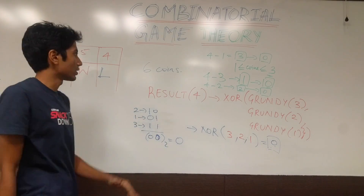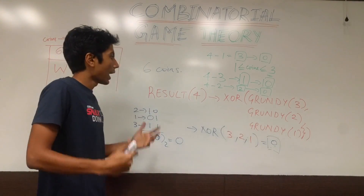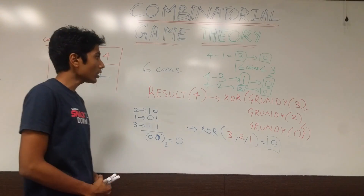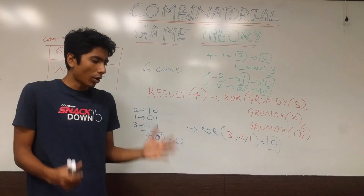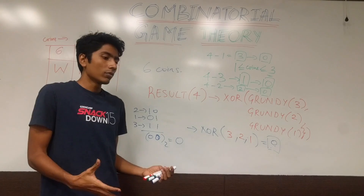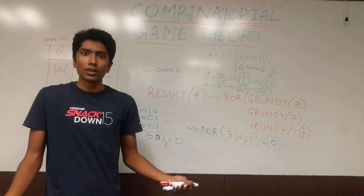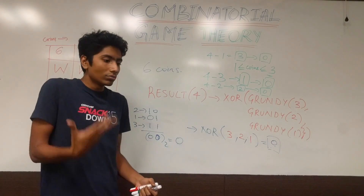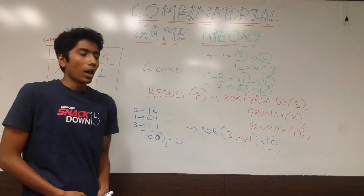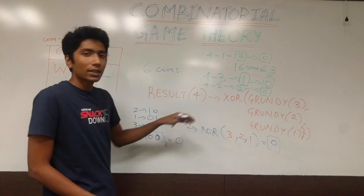So this is what Sprague-Grundy states: given a position, take the XOR of all possible next positions. If it equals 0, you are losing; otherwise you are winning. This is a pretty common concept in competitive programming, where two players play optimally and you need to determine who wins at the end — not the moves, just who wins.